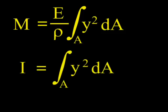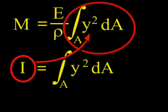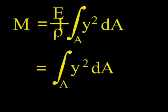Now the quantity described by the integral is the moment of inertia. So we can substitute I into the equation to get M equals EI over ρ.